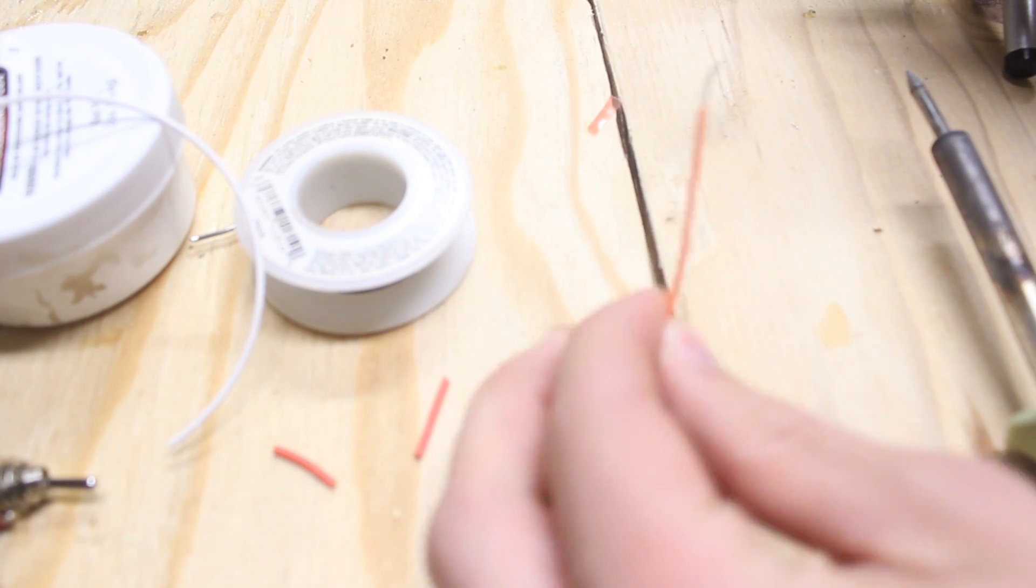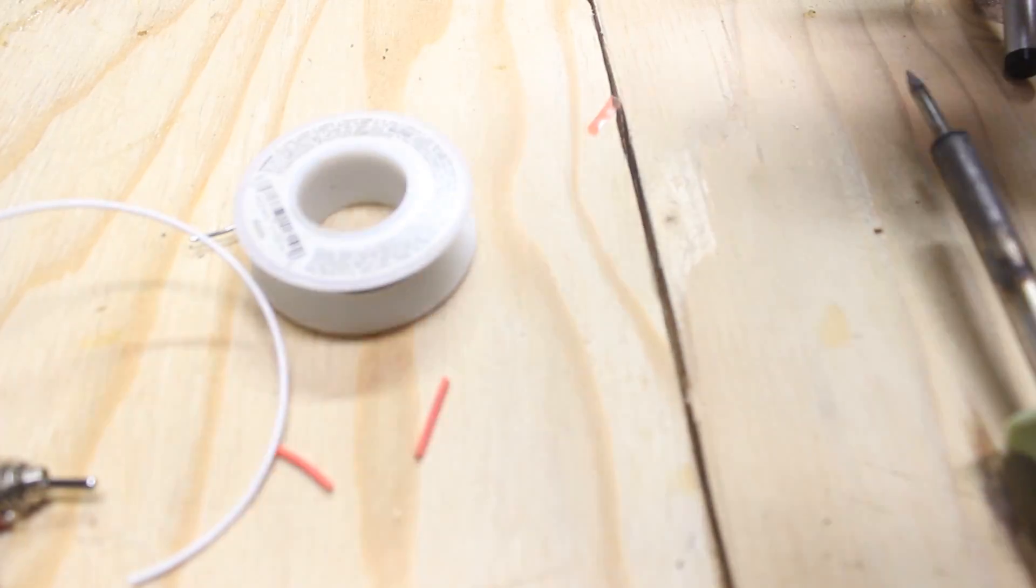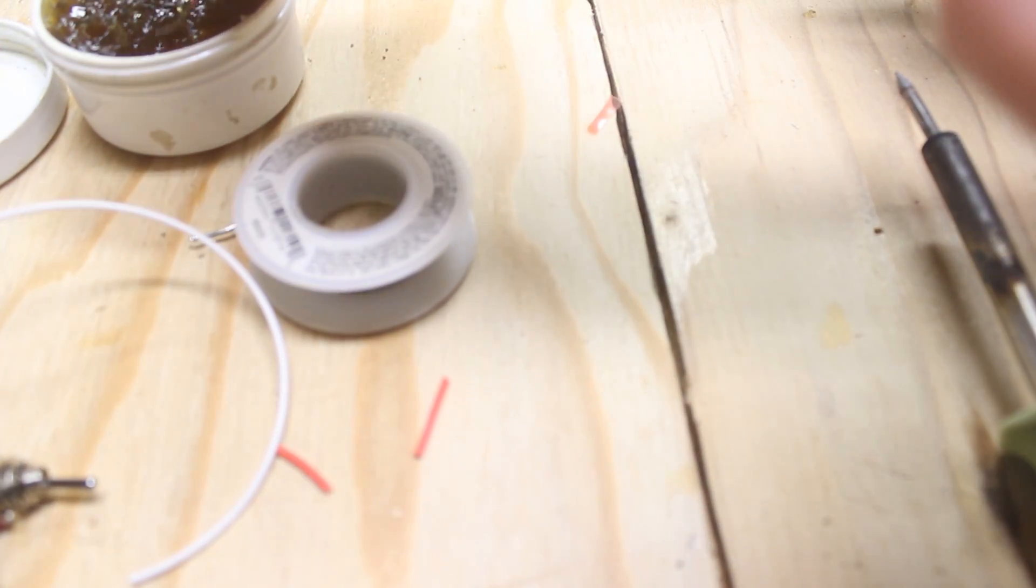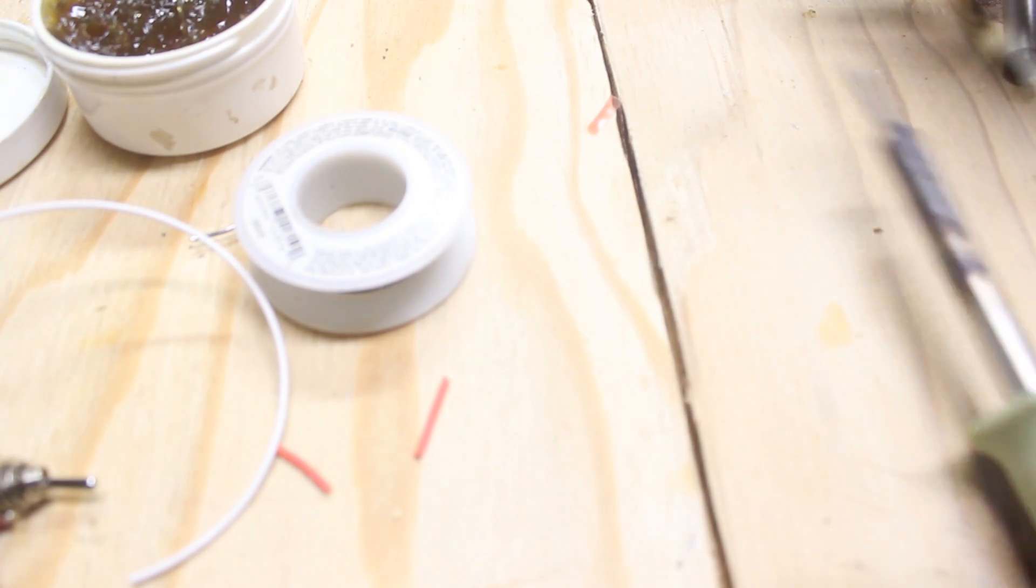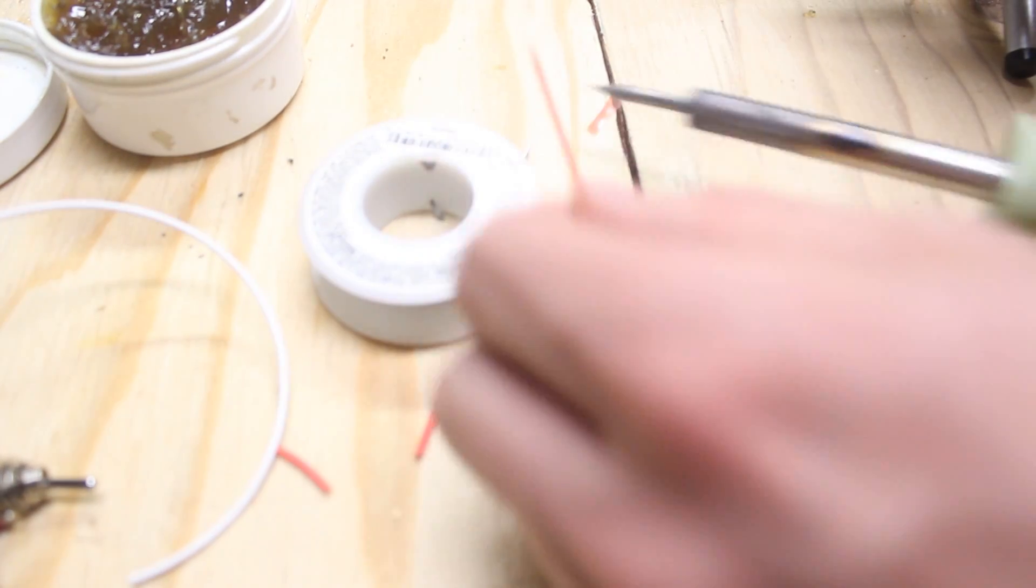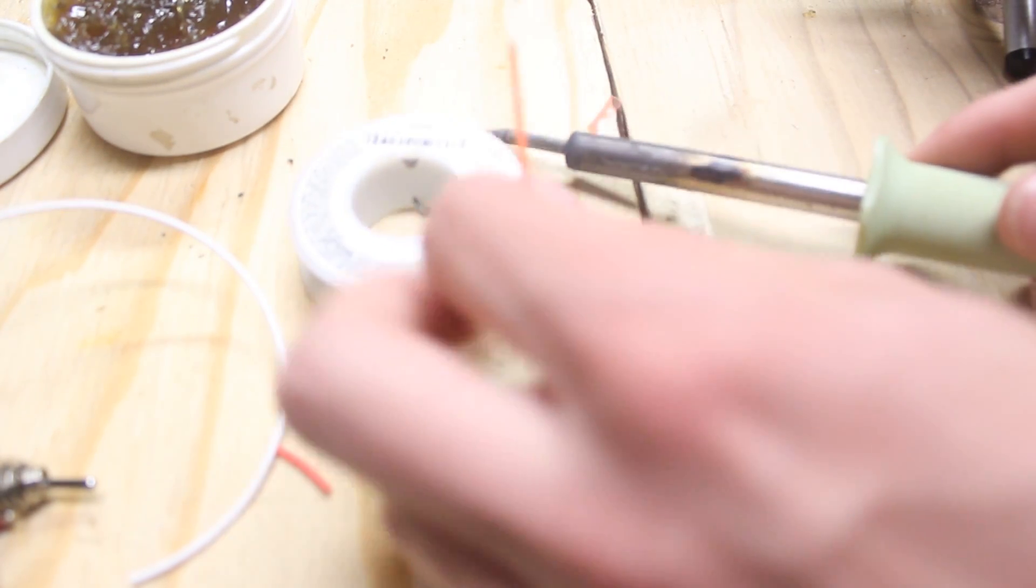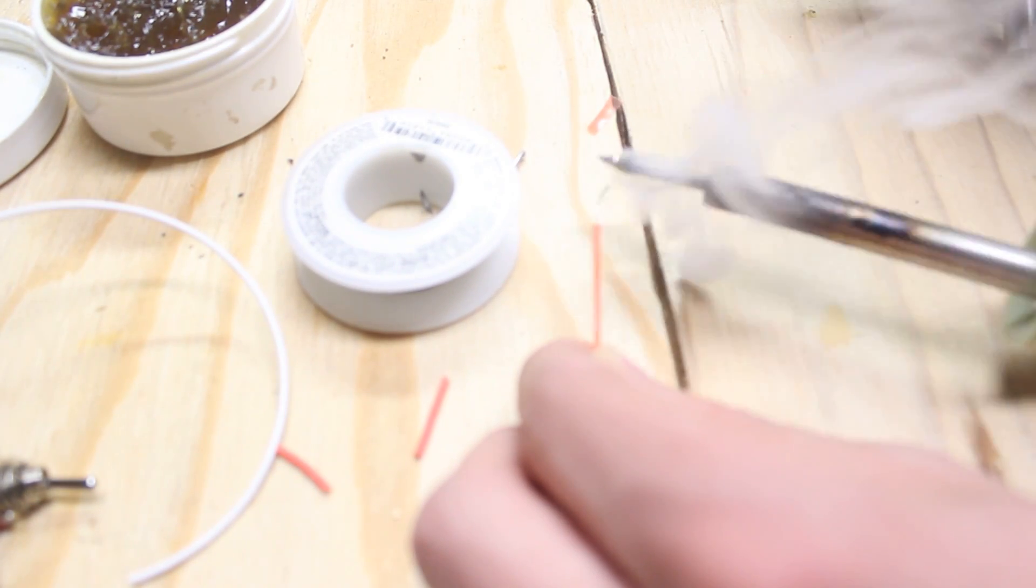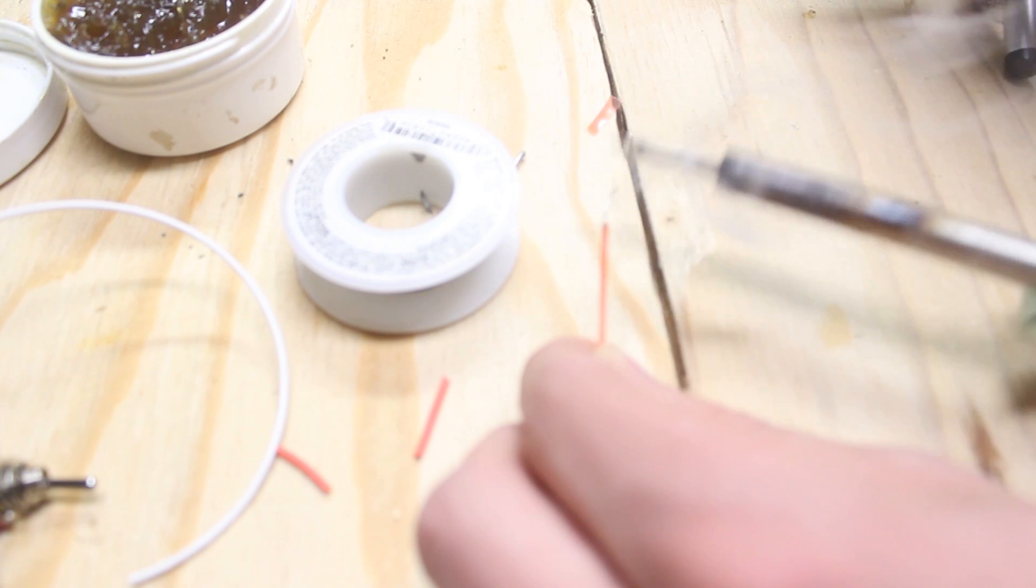I'm going to go ahead and twist the wire. And we're going to go ahead and pre-tin these. Get a little flux on there. Take our soldering iron. Let's go ahead and tin this. And you're going to do this for both of them.